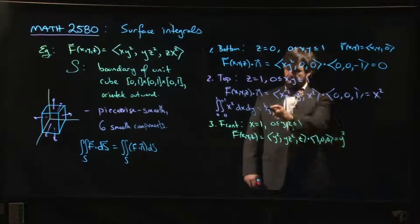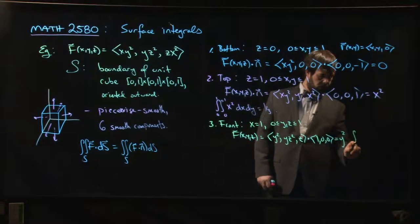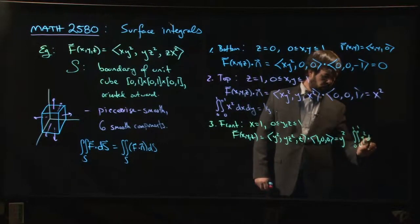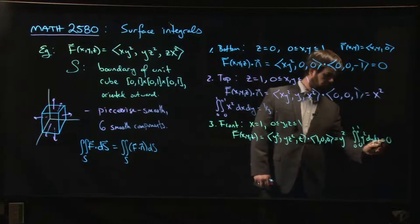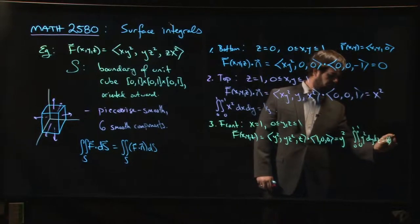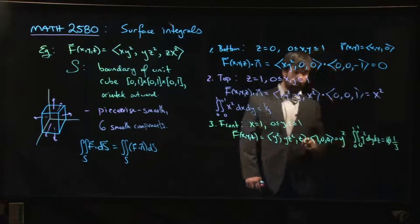And just like here, we're going to go from zero to one, zero to one, y² dy dz, and we get another one third.